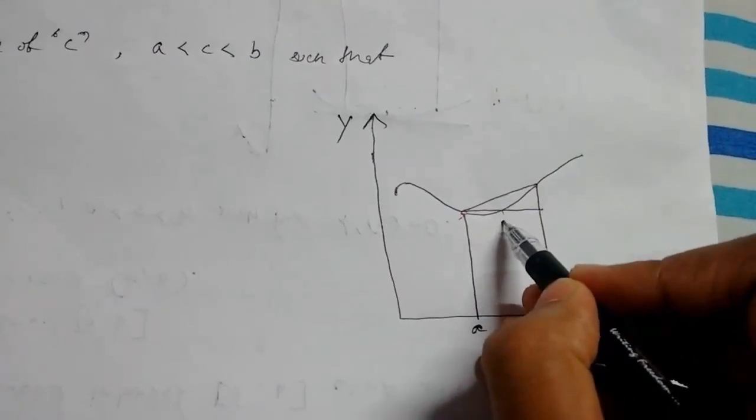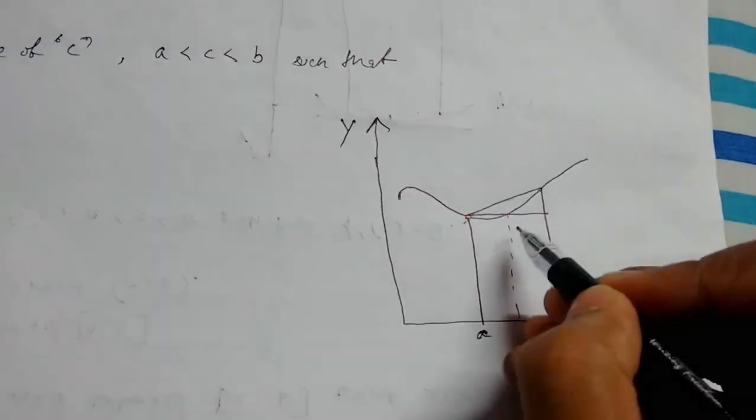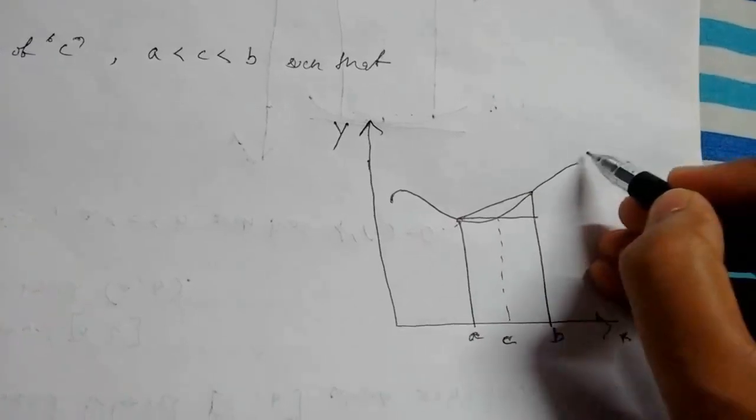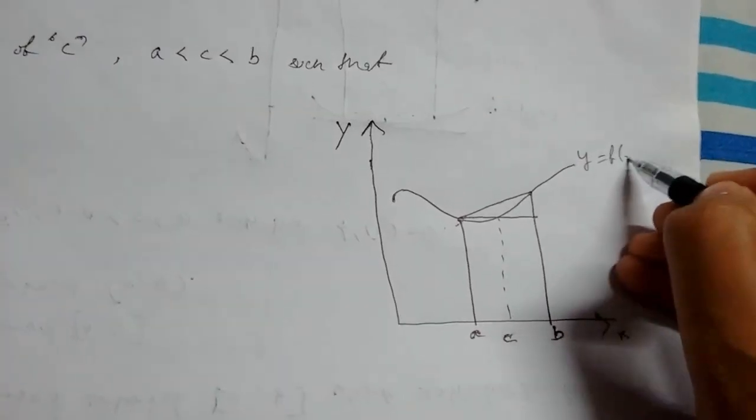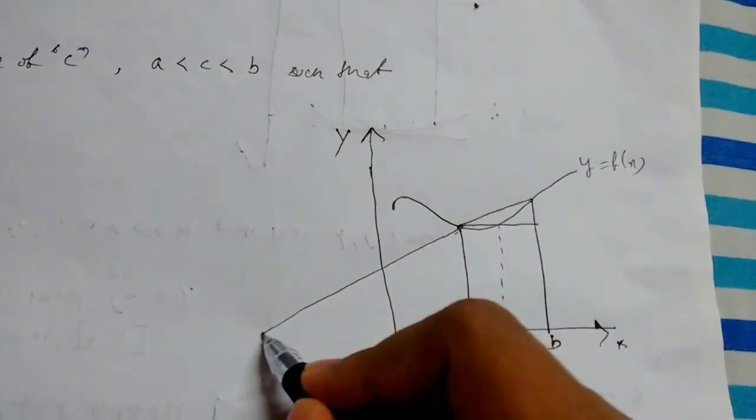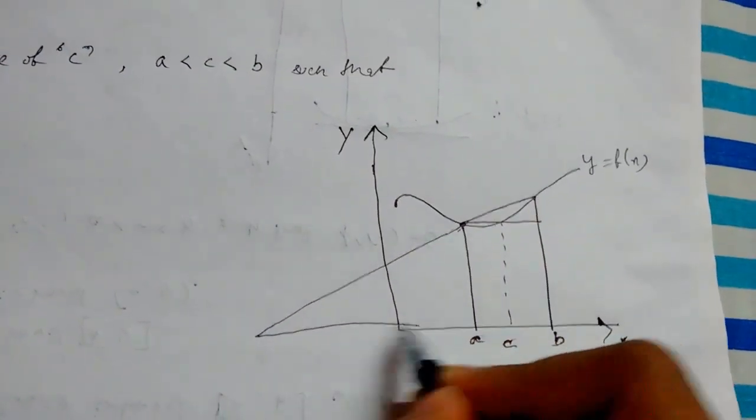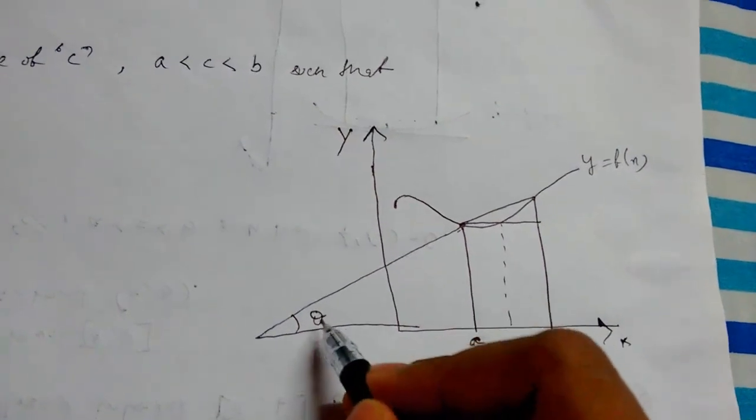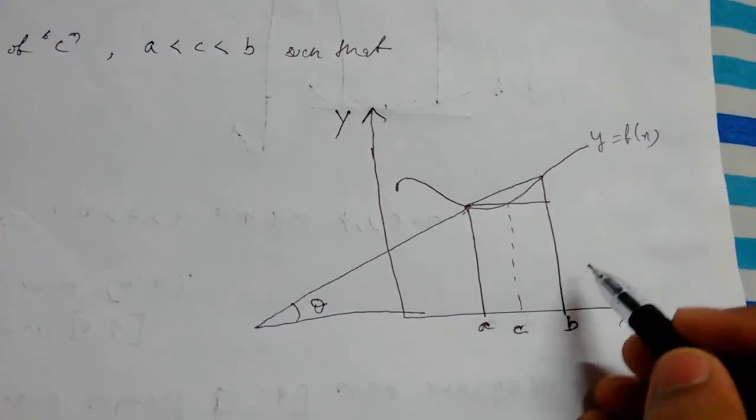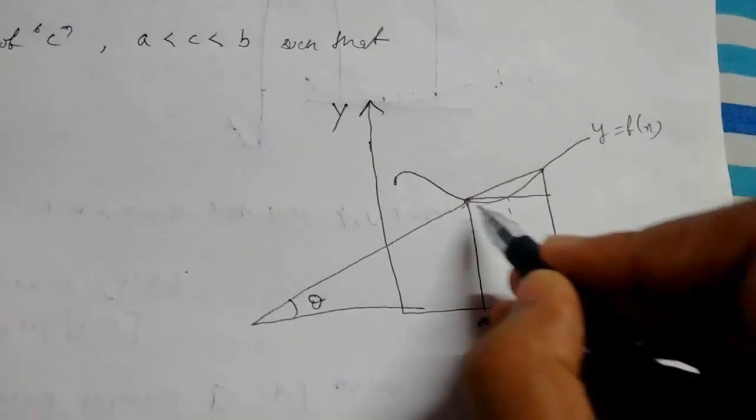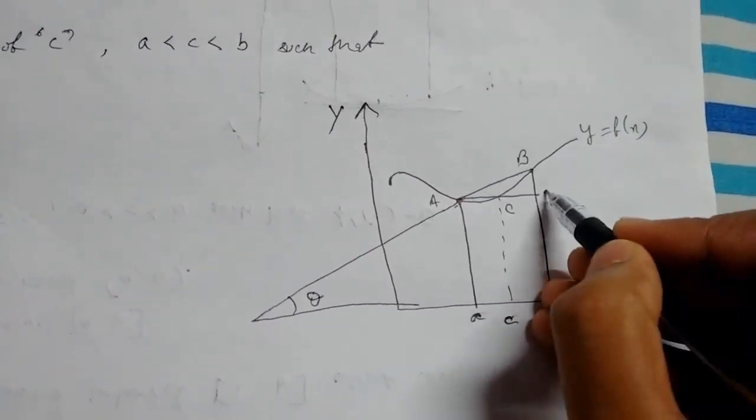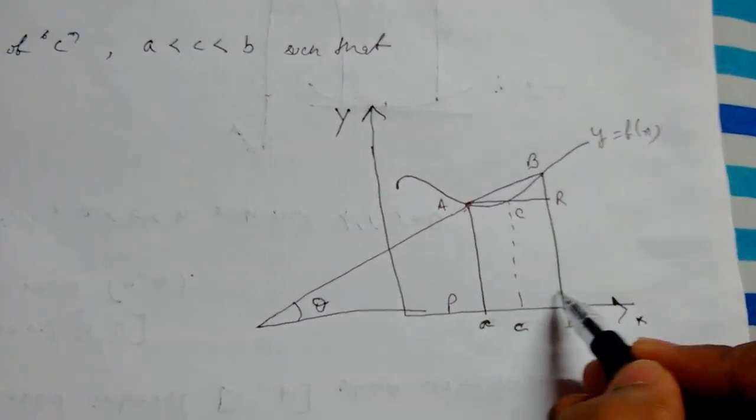Now we also draw like this. Now we take a point c. So curve y = f(x). So now from the graph we see that, let me name this: this is A, B, C, P, Q, R, P, Q.